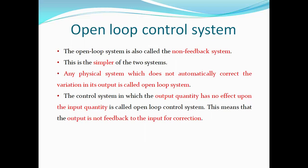What is an open loop control system? Any physical system which does not automatically correct the variation in its output is called an open loop system. It is also called a non-feedback system. This is the simpler one. Here, the output quantity has no effect upon the input quantity. This means the output is not fed back to the input for correction.